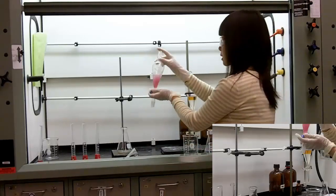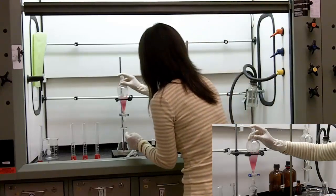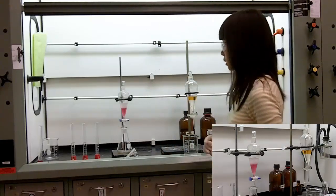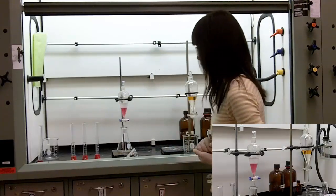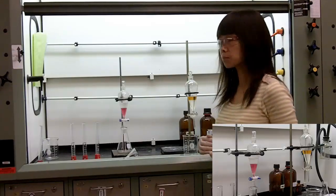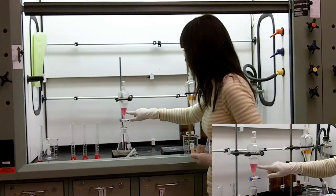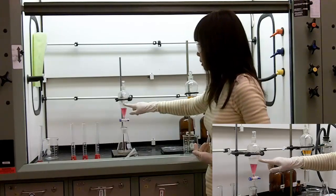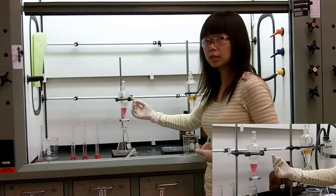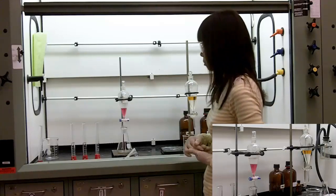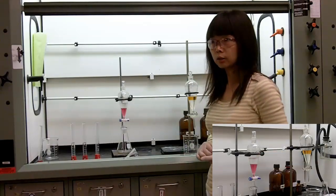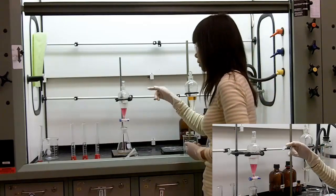Now we let it sit on the ring stand. Wait about one or two minutes and these two layers will separate very well. You can see our compound is migrating into the organic layer, which is the bottom layer. The color in the aqueous layer was brown originally, but now it's getting clear, meaning most of the compound has been extracted into the organic layer. Now we can separate these two layers.